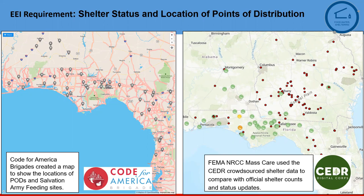For Hurricane Michael, on the left you'll see the location of points of distribution and Salvation Army feeding sites, and on the right a map of different shelters. This takes a lot of active work — volunteers curate this information from different state websites, from Twitter and social media in general. When you click on any of these dots, it tells you the source of where that information came from. These are live feeds that continually update and are public facing, so survivors can access this map and we here at FEMA can also access it.